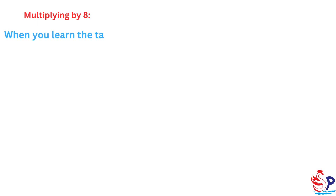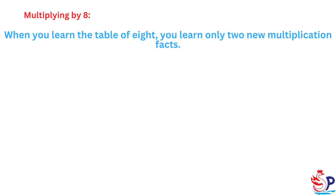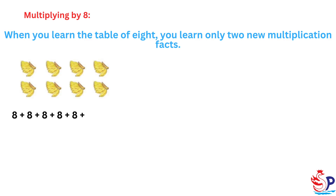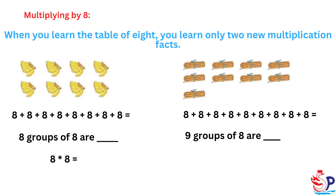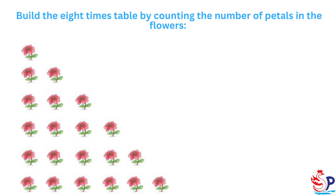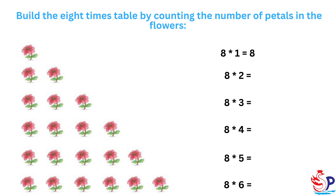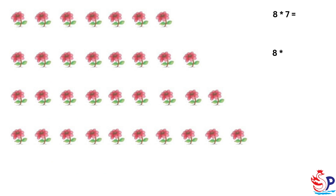Multiplying by 8. When you learn the table of 8, you learn only two new multiplication facts. 8 plus 8 plus 8 plus 8 plus 8 plus 8 plus 8 plus 8 equals 8 groups of 8; 8 times 8 equals. 9 groups of 8; 9 times 8 equals. Build the 8 times table by counting the number of petals in the flowers: 8×1=8, 8×2=, 8×3=, 8×4=, 8×5=, 8×6=, 8×7=, 8×8=, 8×9=, 8×10=